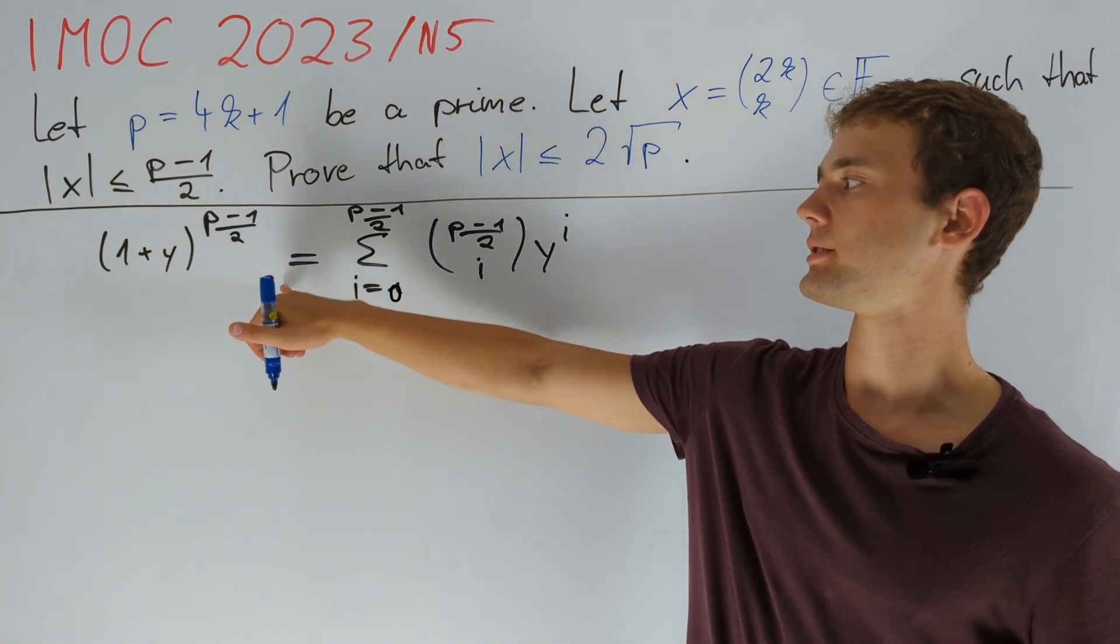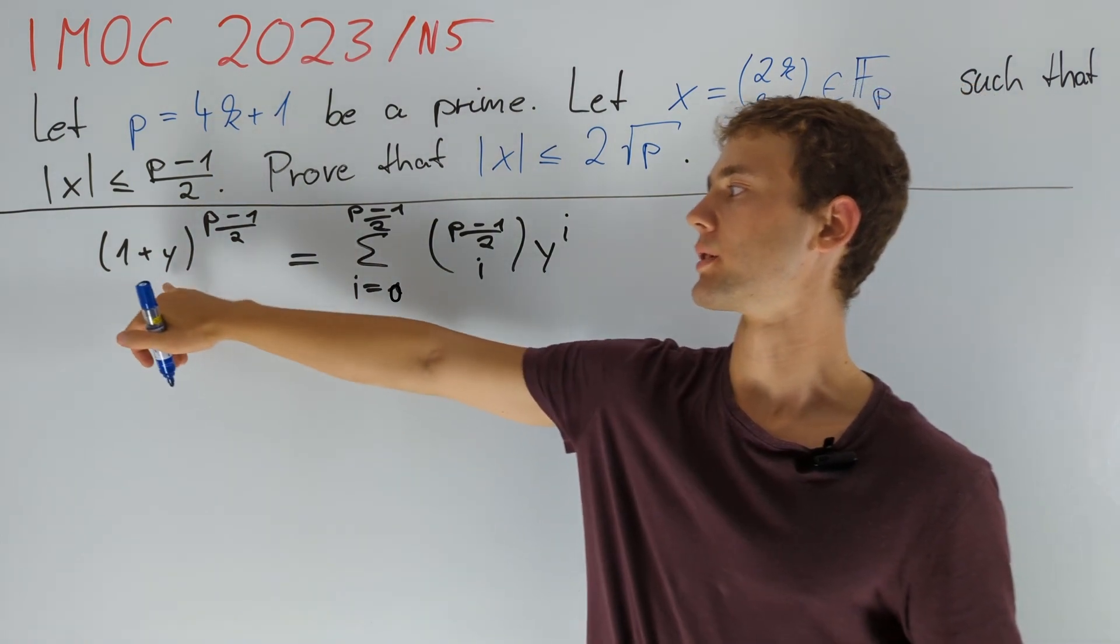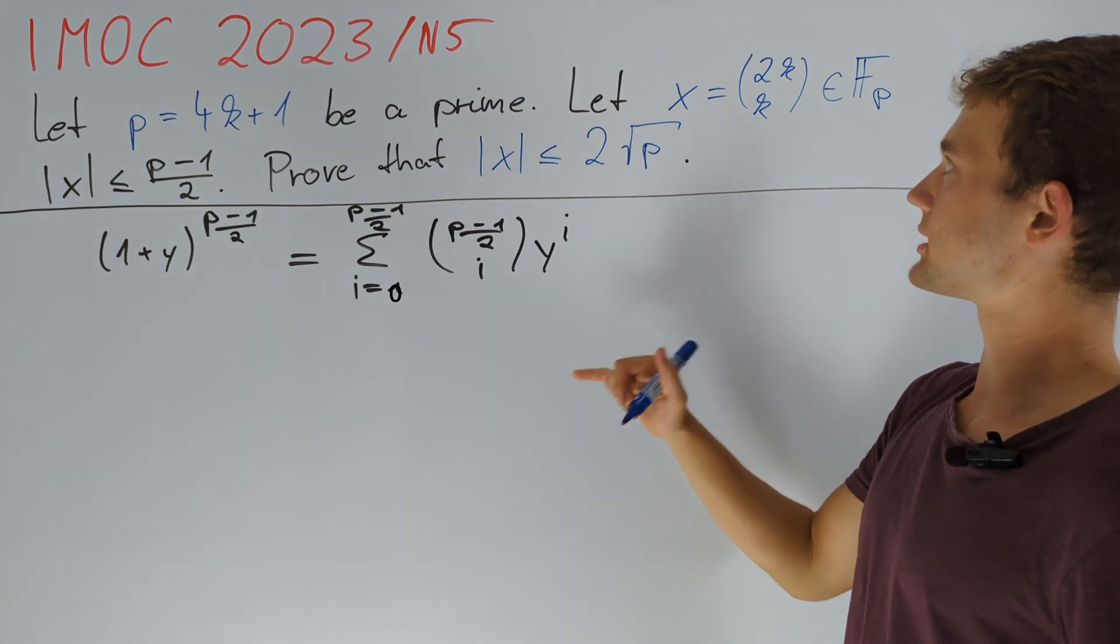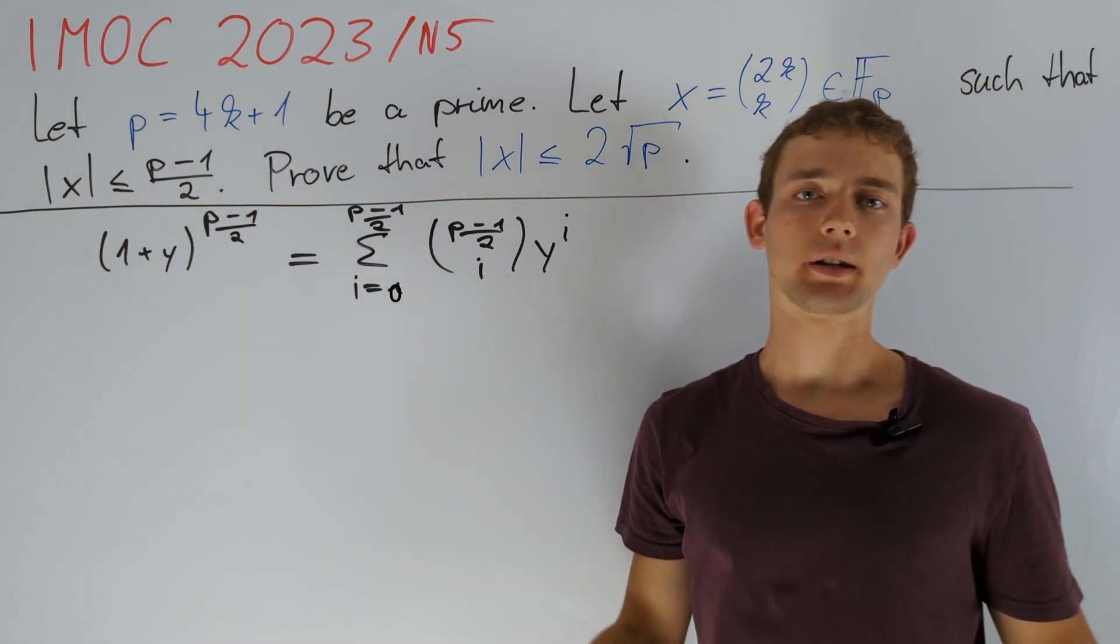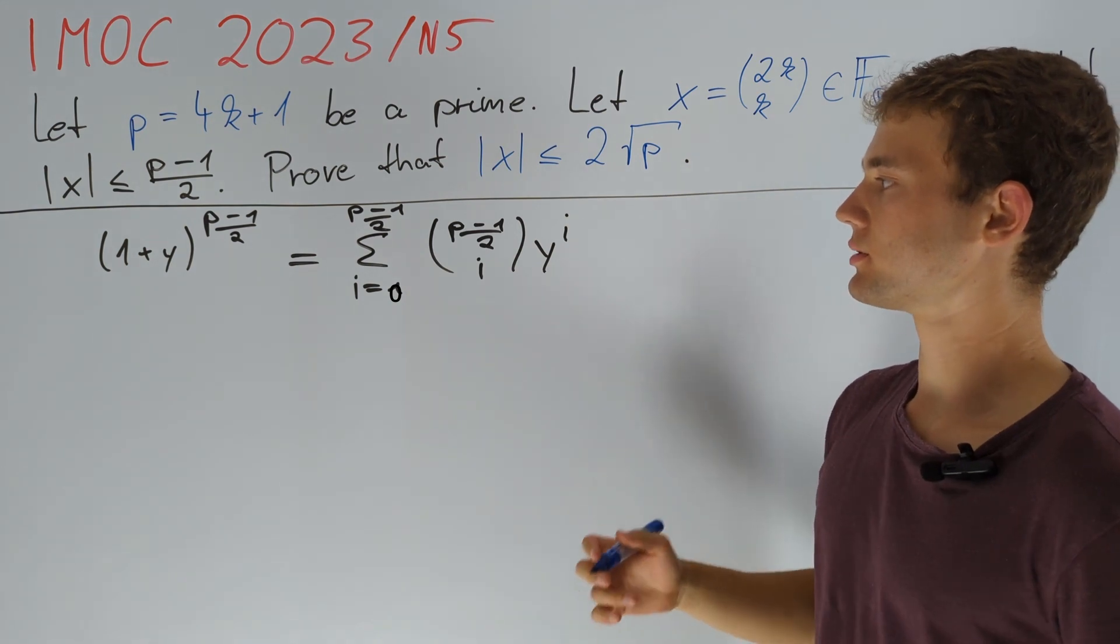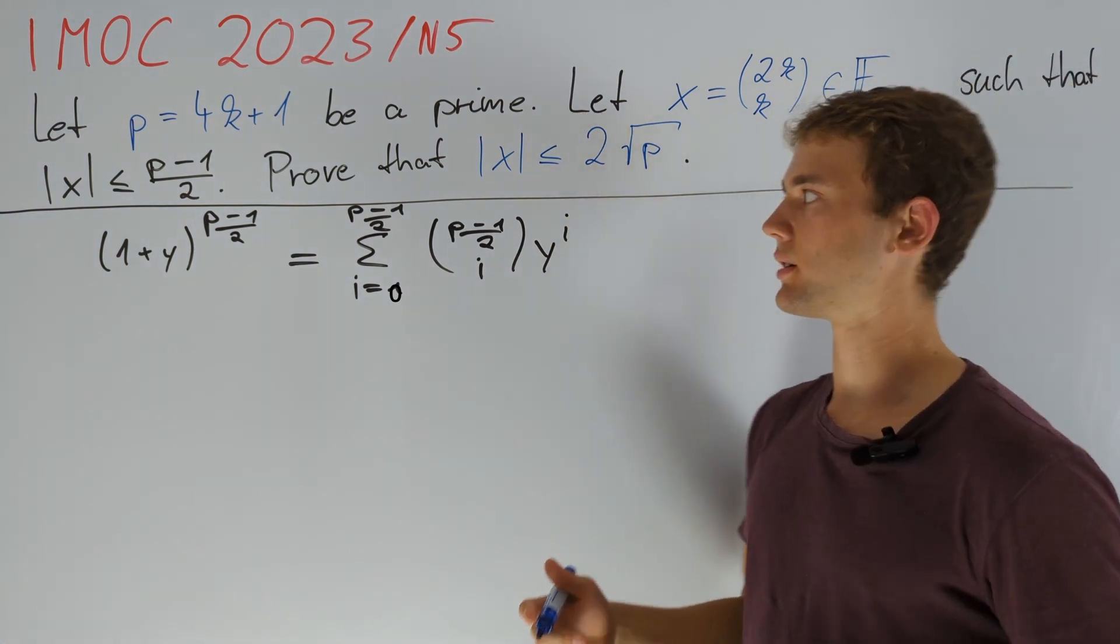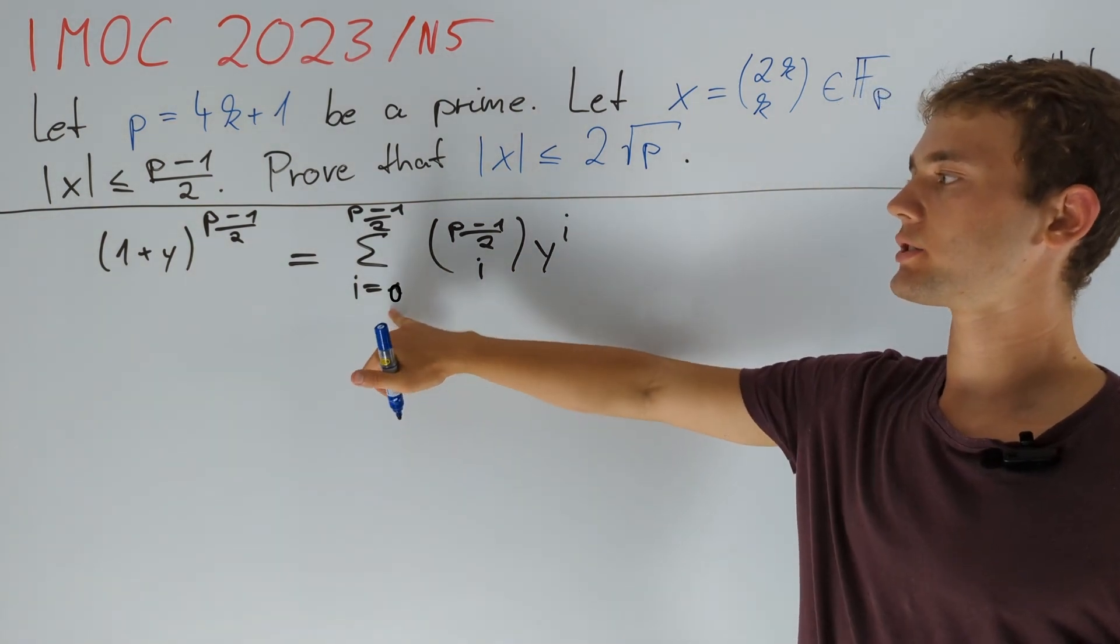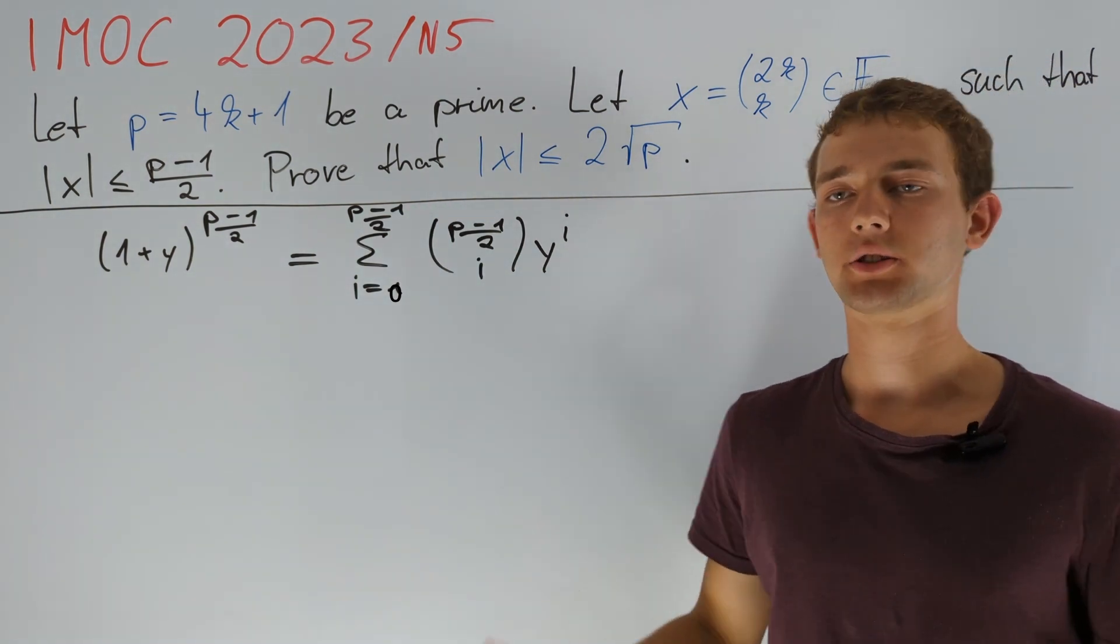Our first idea is to sum this equation up over many different values of y such that all of those summands except for 2k choose k will cancel out. And to accomplish this we want to use the fact that cyclic geometric series in Fp are equal to 0. In particular we sum this equation over all fourth powers modulo p.